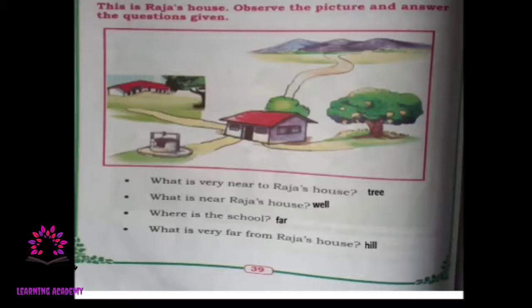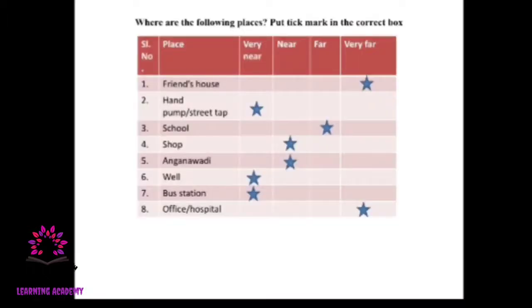What is very far from Raja's house? Look at the back side of the house — you can see a hill. So a hill is very far from Raja's house. Now, where are the following places? Put a tick mark in the correct box.